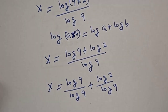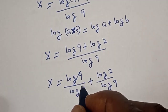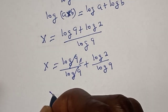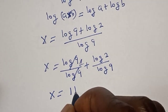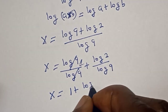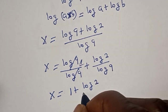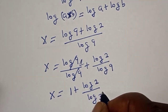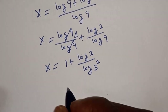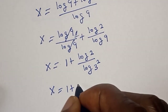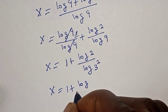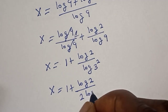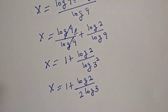We can split this: s is equal to log 9 over log 9 plus log 2 over log 9. The first term cancels to 1, so s is equal to 1 plus log 2 over log 9. And log 9 can be rewritten as log 3 squared, giving s equal to 1 plus log 2 over 2 log 3.